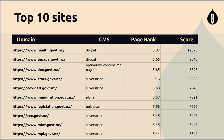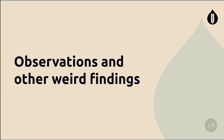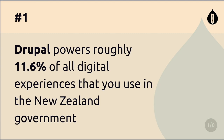The top sites include Te Papa, Stats, the COVID site, Immigration, and Christchurch City Council. Now here's the part I had a lot of fun with — pulling out all the weird and wonderful things discovered during this exercise. First highlight: Drupal powers roughly 11% of all the digital experiences that New Zealand government users encounter. Hopefully knowing that helps motivate attendees at the code sprint on Friday.